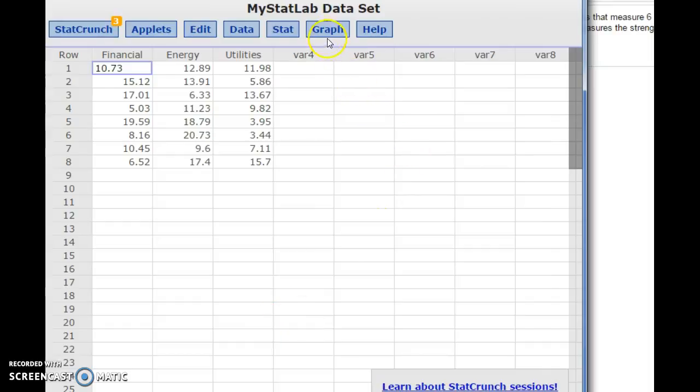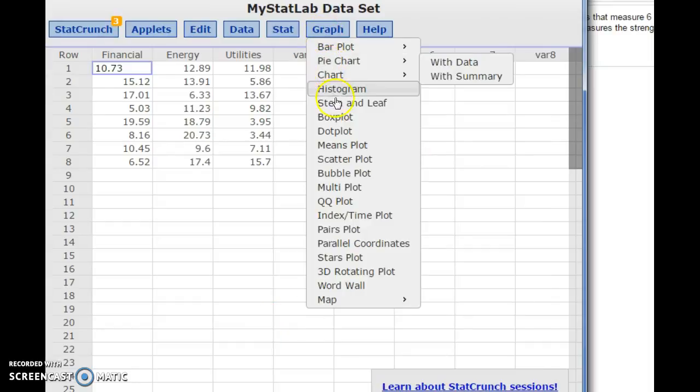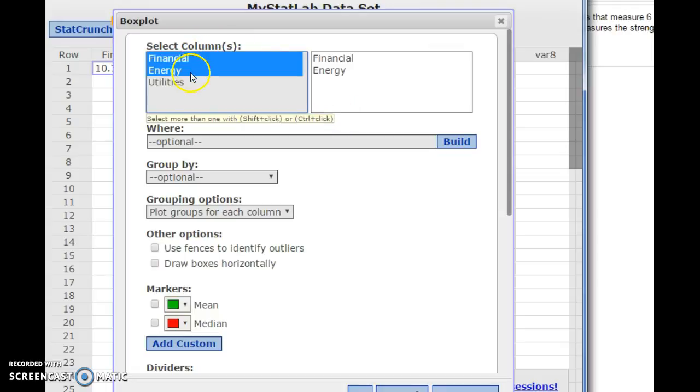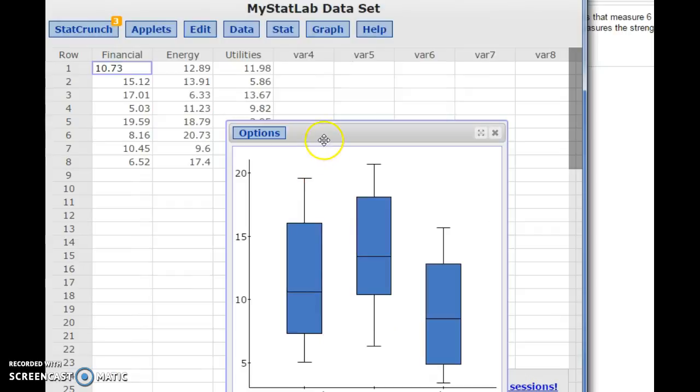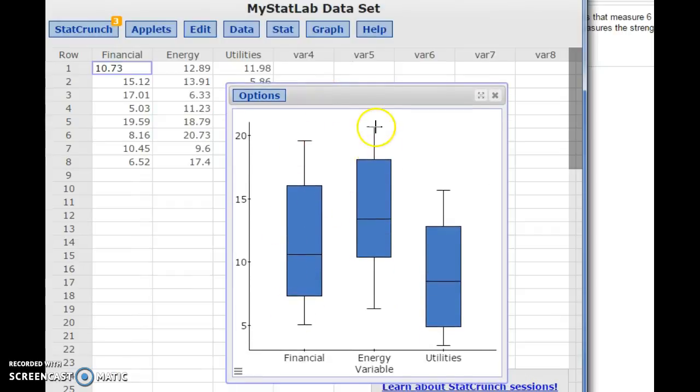There's something similar going on with box plots. If you go to graph box plot, and then select your three columns there, you'll notice that the box plots are vertical in StatCrunch and they're horizontal in your homework. But you can still just twist it to the side, and you'll see the same results, and be able to compare and choose the right answer.